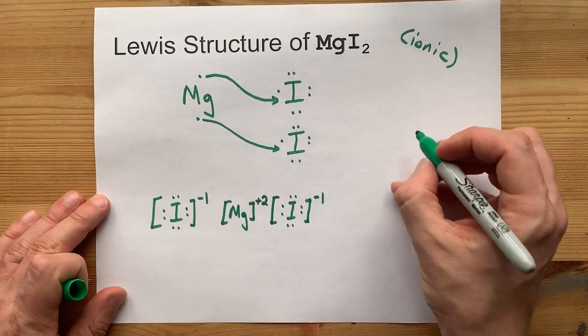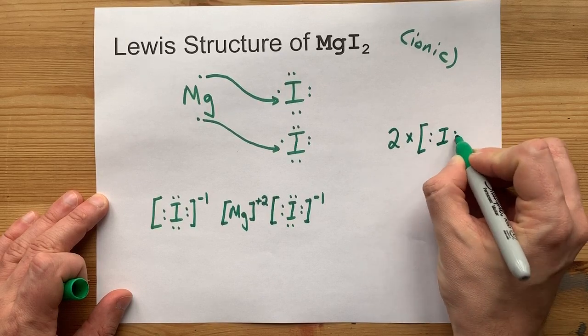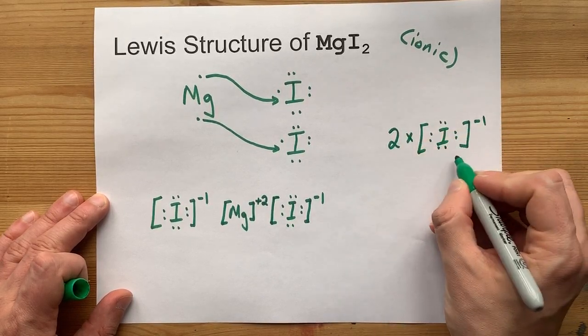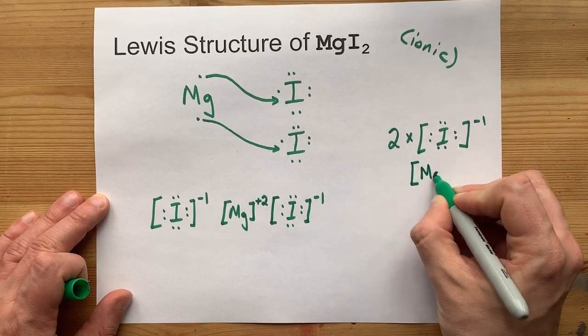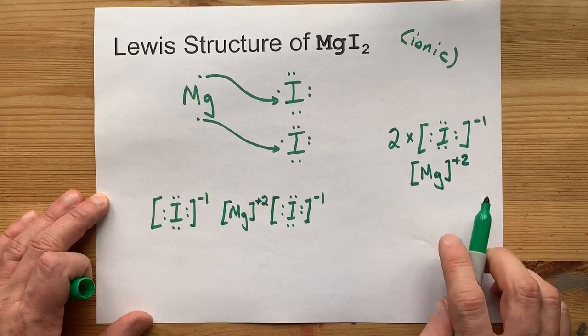Now you may be able to take a shortcut here and show two times those iodines. That just saves you from having to write it out twice. Just don't forget to put your magnesium with the plus two charge there as well.